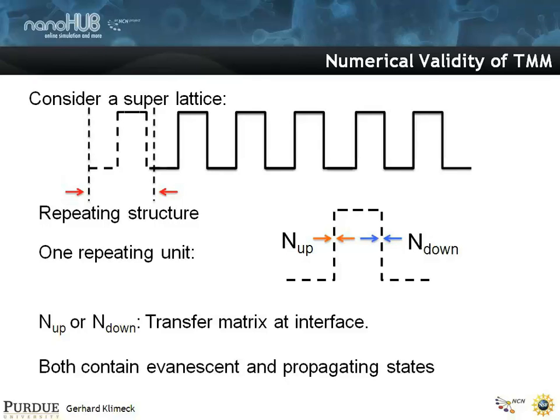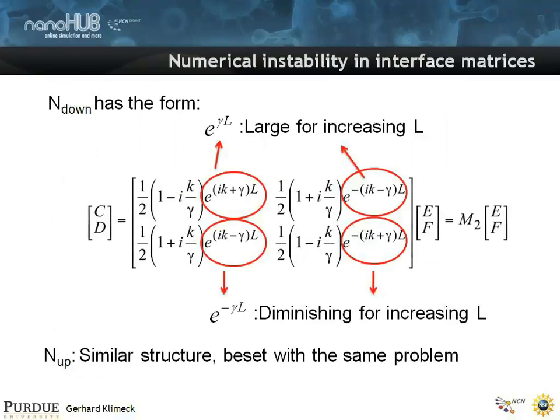Now when I said evanescent, I also meant exponentially growing. There's an e to the minus kappa d, and an e to the plus kappa d, because both are valid solutions. And they're sitting in that matrix.